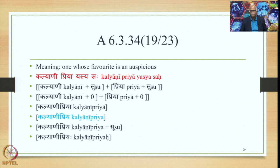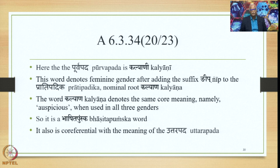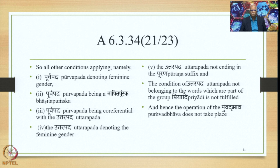Adding suffix Su gives Kalyani Priya, fit to be used in a sentence. Here the Purvapada is Kalyani. This word denotes feminine gender after adding the suffix Ngip to the Pratipadika Kalyana. The word Kalyana denotes the same core meaning — auspicious — when used in all three genders, so it is a Bhashita Pumska word. It also is coreferential with the meaning of the Uttarapada. All conditions apply — Purvapada denoting feminine gender, being Bhashita Pumska, being coreferential with the Uttarapada, the Uttarapada denoting feminine gender, and not ending in the Purana suffix — but the condition of the Uttarapada not belonging to the words of the group Priyadi is not fulfilled. Hence the operation of Pumbad Bhava does not take place.